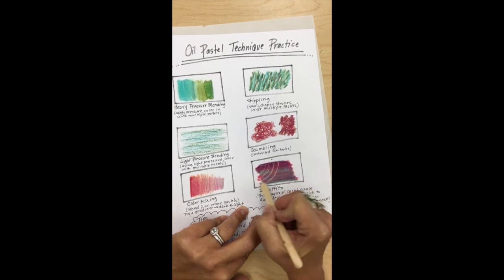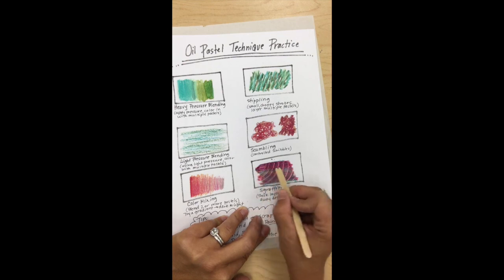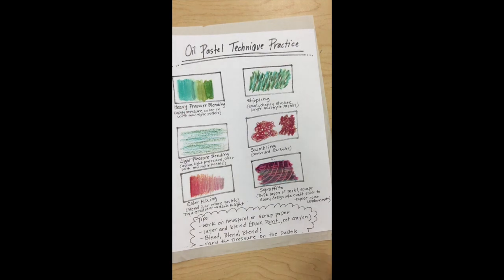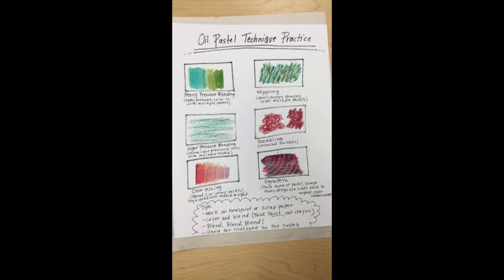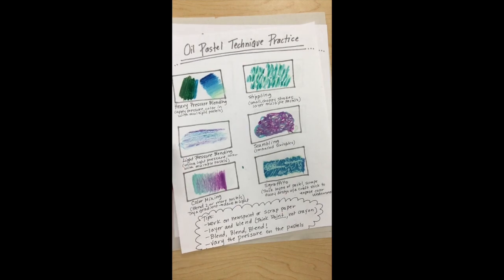And then you're gonna take something to kind of scrape away a design. So this is like a craft stick but you could use other things. You could scrape away a design or a pattern or texture, or you can like draw into this if you'd like to. Okay, so that's oil pastels. Let me know if you have any questions about this. This is my two kind of sheets so you can see some of the finished ones. Good luck.